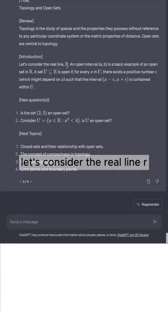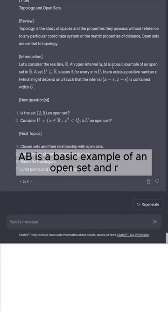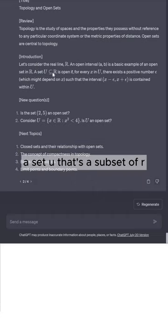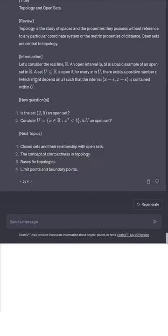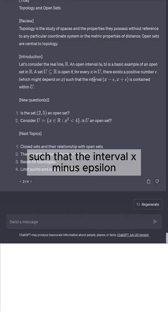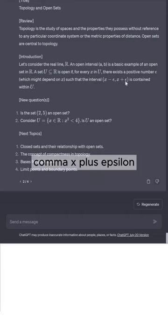Let's consider the real line R. An open interval (a,b) is a basic example of an open set in R. A set U that's a subset of R is open if for every x in U there exists a positive number epsilon, which might depend on x, such that the interval (x - epsilon, x + epsilon) is contained within U.